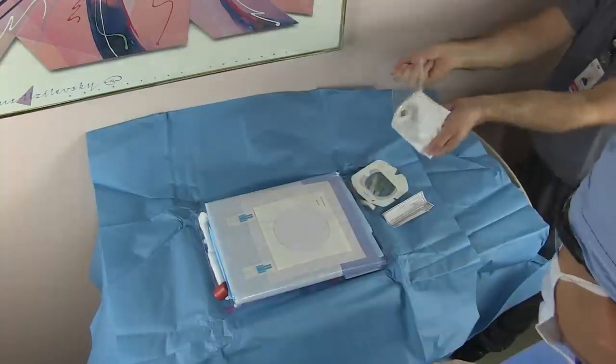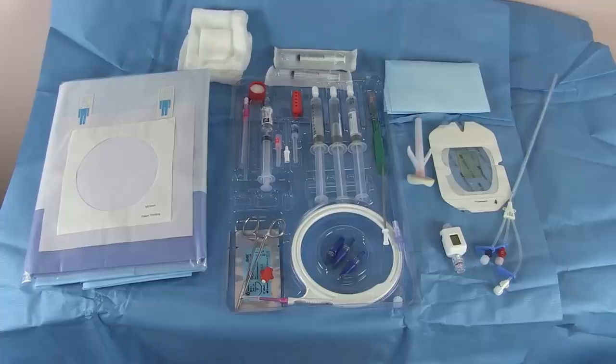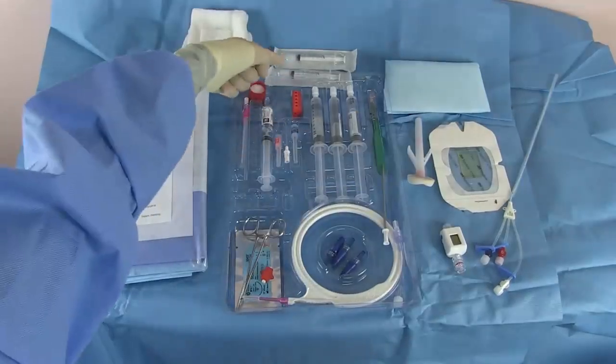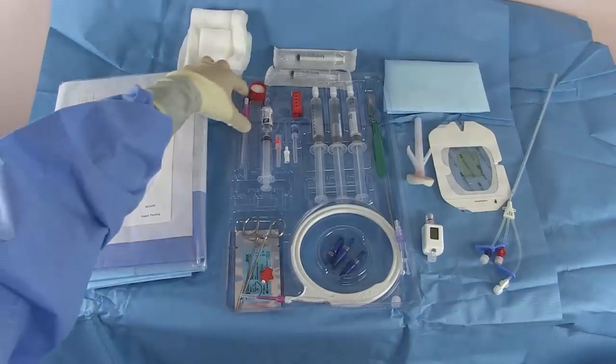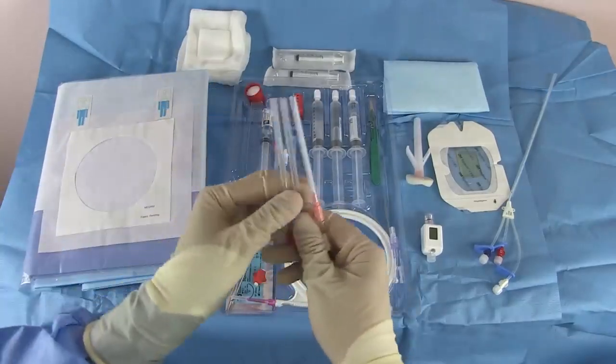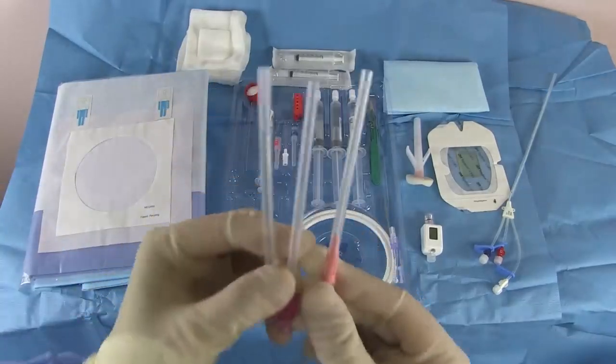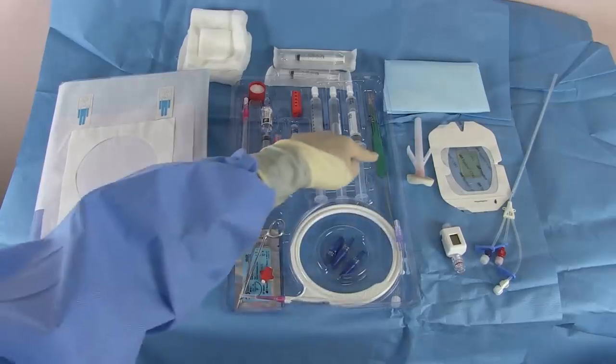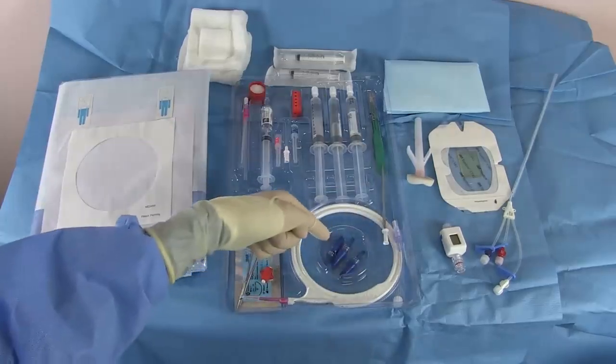There's the drape, the prep stick, the lidocaine syringes and needles we need to inject. Here are a few finder needles. One is long, one is short, and one has a small catheter attached to it. Here's the guide wire in its sheath. Here's the dilator for the skin. Knife. Sterile saline flushes. Caps for the catheter.